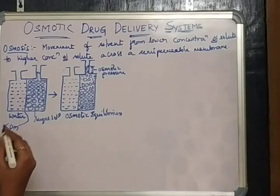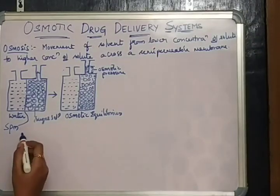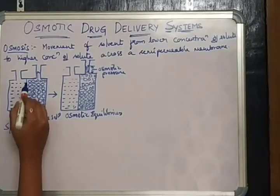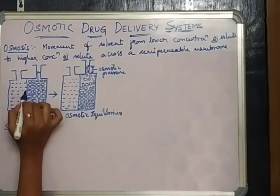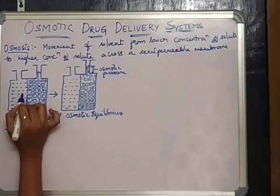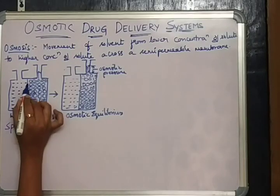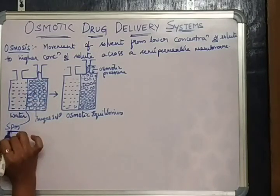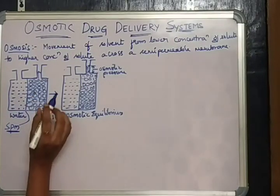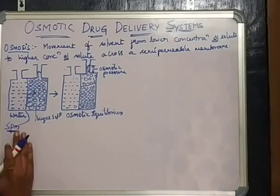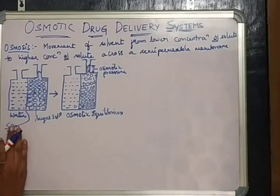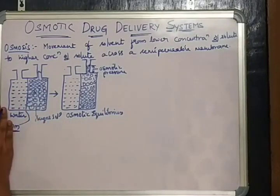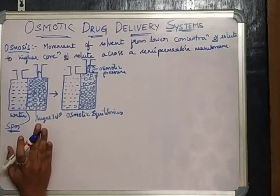In this, we are taking water — pure water and a sugar solution. It is taken in a beaker and both are separated by a semi-permeable membrane. This semi-permeable membrane is permeable to water but impermeable to sugar solution.